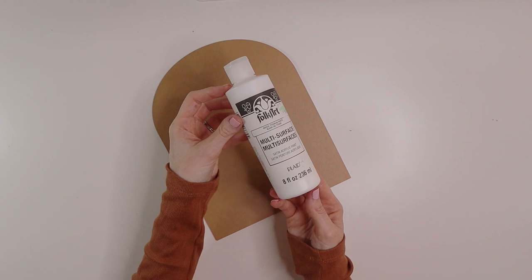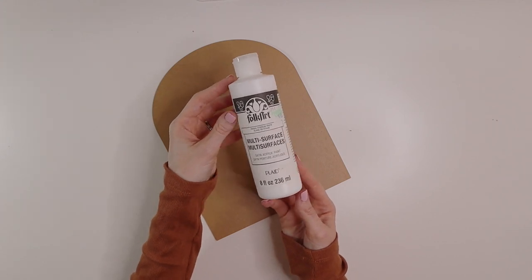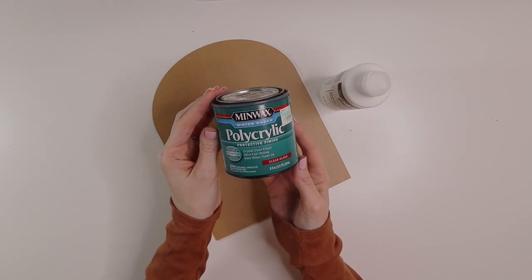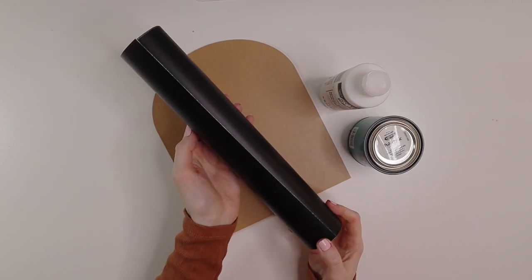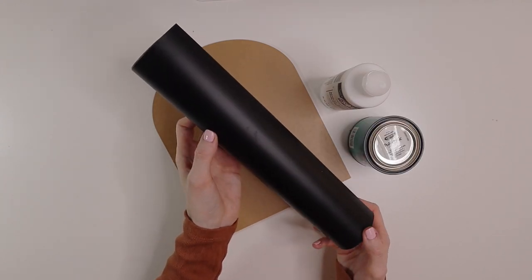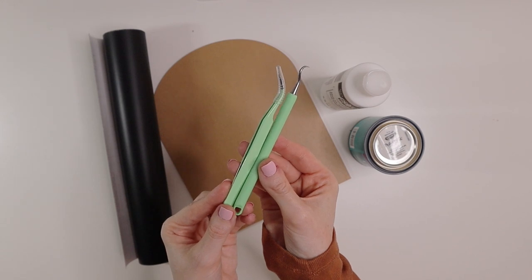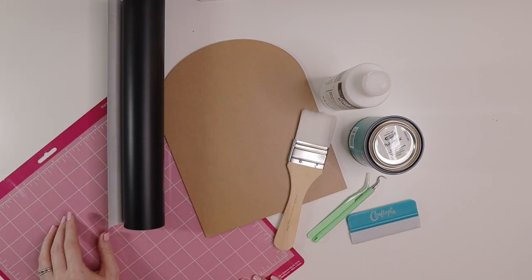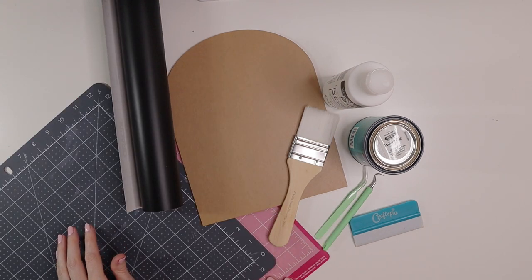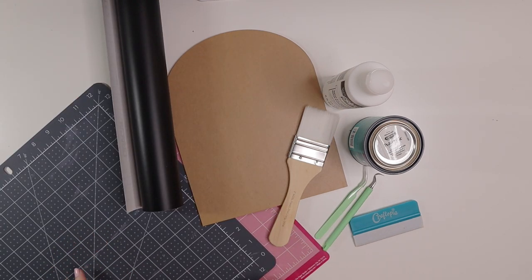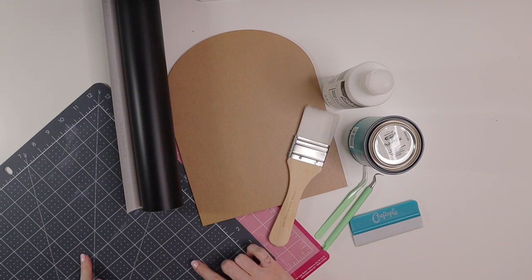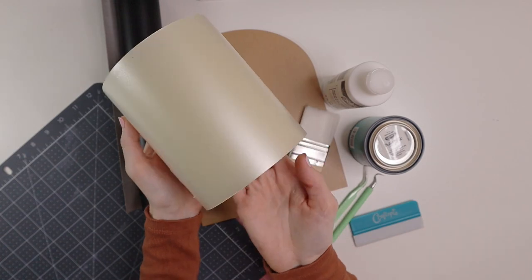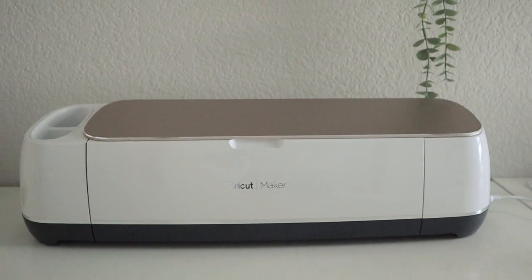You will also need some acrylic paint. Today I'm going to be using white. You will need some polycrylic to seal the back of the sign. You will also need some vinyl. Today I'm going to be using matte black. Some weeding tools, a soft scraper, a paint brush, a cutting mat for the Cricut, and then I have this Cricut self-healing mat here. I like to use this to line up the acrylic whenever I'm placing the lettering onto the acrylic piece. You also need some transfer tape, and of course we will need our Cricut as well.